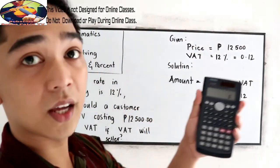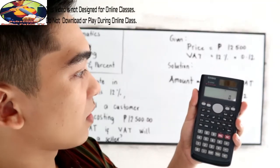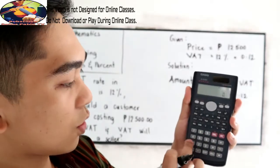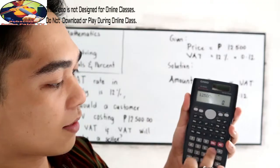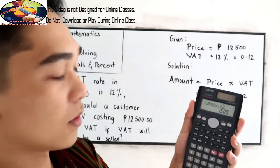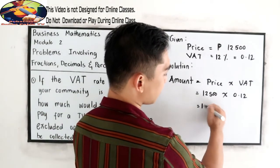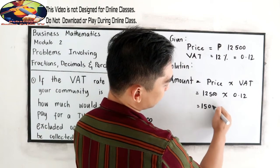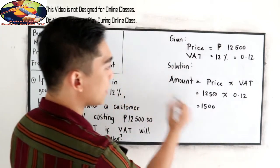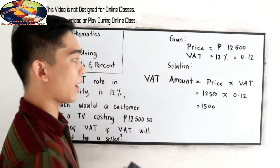Use your calculator. 12,500 times 0.12 equals 1,500. This will be the VAT amount that you're going to pay.